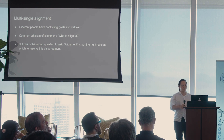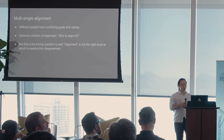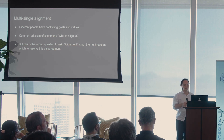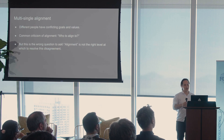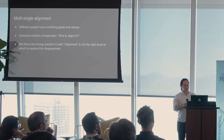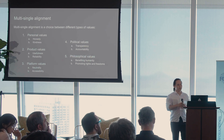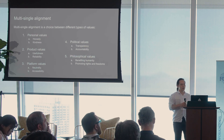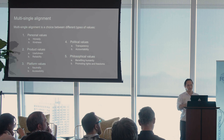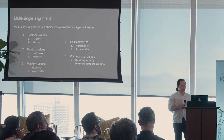Quickly on multi-single alignment: a common criticism of the alignment field is the question of who you're going to align to, because different people have conflicting goals. But I think this is actually the wrong question to ask. We shouldn't really be striving to answer who alignment should be aligning to, because in general, when we have systems interacting with a wide range of people, we don't actually try to combine the different values of individual humans — rather, we try to identify higher-level values to align these models to.